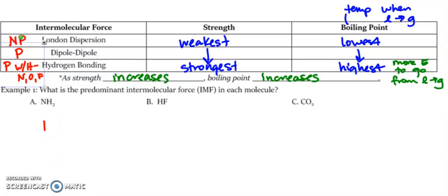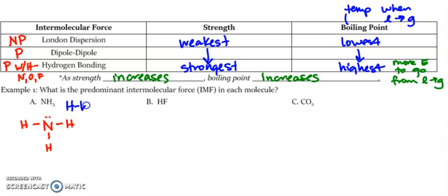If I draw out NH3, nitrogen has five valence electrons and each hydrogen has one, so I bond a hydrogen on each site on the nitrogen. This would be trigonal pyramidal because of the lone pair, which makes it polar. Do I have hydrogen bonding? I have hydrogen bonded to N — and N, O, or F qualifies — so its predominant intermolecular force would be hydrogen bonding.